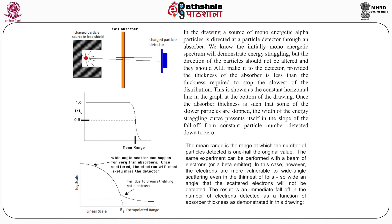The same experiment can be performed with a beam of electrons or a beta emitter. In this case, however, electrons are more vulnerable to wide-angle scattering even in the thinnest of foils, so wide-angle scattered electrons will not be detected. The result is an immediate falloff in the number of electrons detected as a function of absorber thickness. Here we can see in the graph that there is a bigger penumbra, which is a result of Bremsstrahlung.